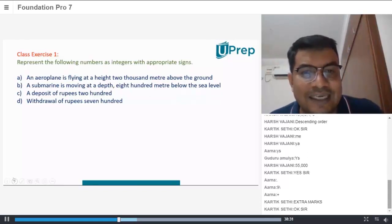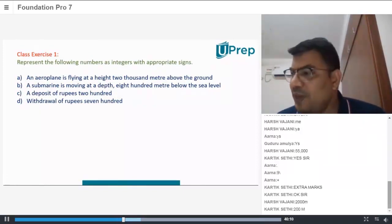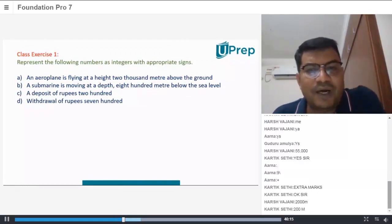Come on, let's get to class exercise representing the following numbers as integers with appropriate signs. An aeroplane is flying at a height of 2,000 meters above the ground. So how do we represent that number?